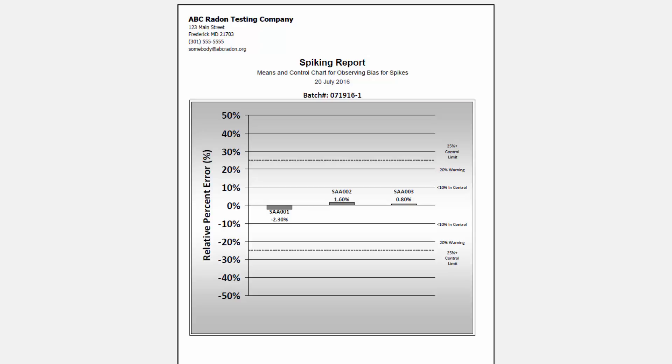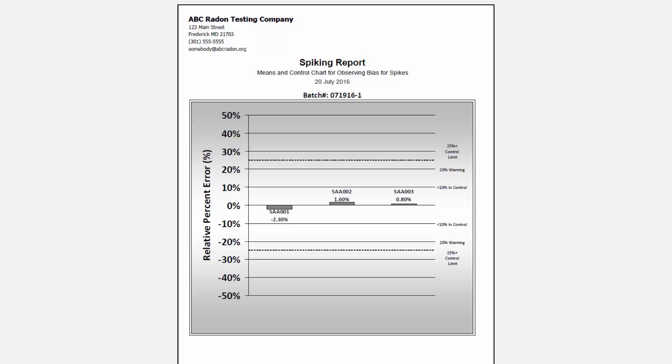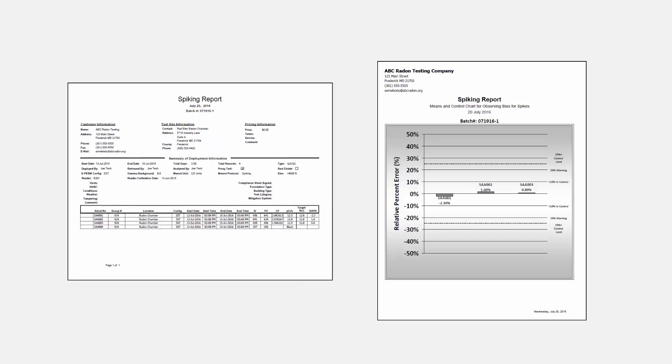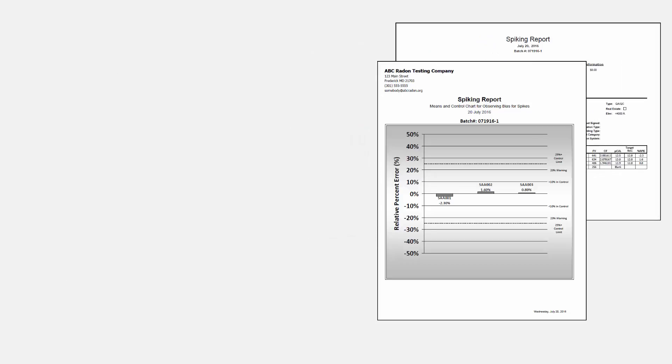The Radon Report Manager will view this spiking record as incomplete until the target radon concentration is filled — it won't register any of these detectors as completed spikes until after you enter the target and generate an RPE. The letter report from our spiking record conveys the same information as the official one from Radelec. You can also print out a lab report to go alongside it — it's always good to have a digital backup of your spiking test.